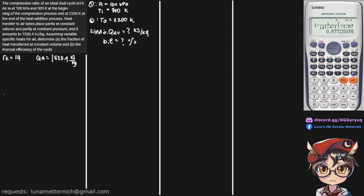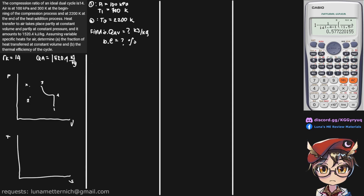To make our lives easier we need to draw our PV and TS diagram. It should be a curve and these two are straight lines. This is where the heat addition at constant volume occurs and this one is the heat addition at constant pressure.